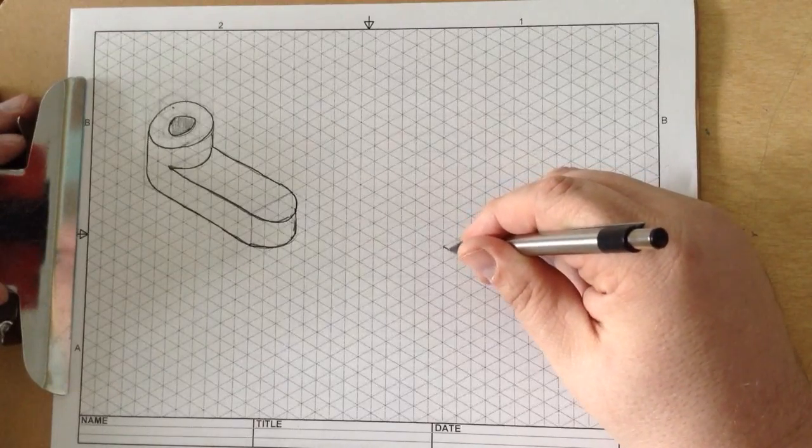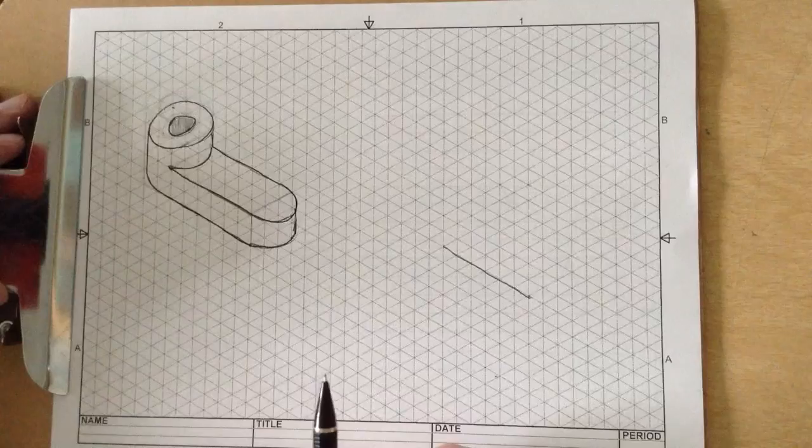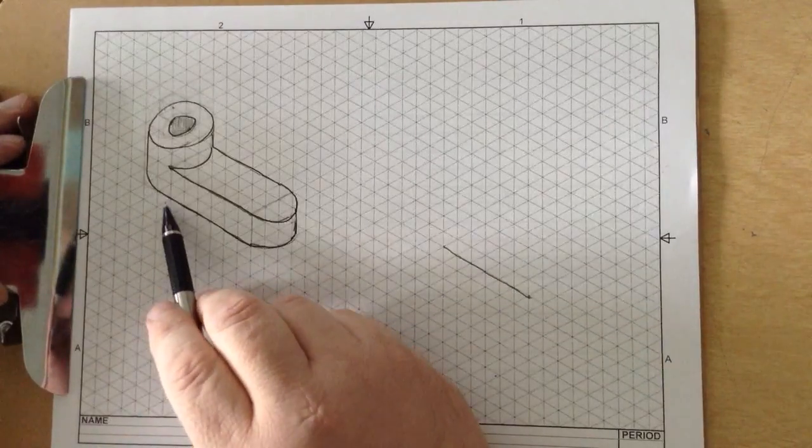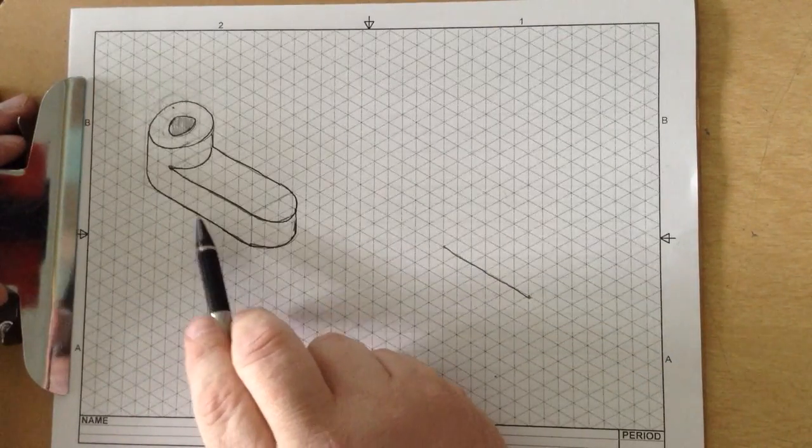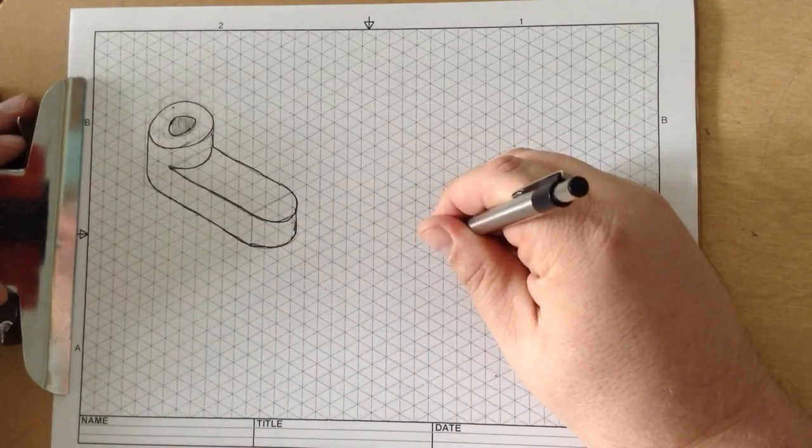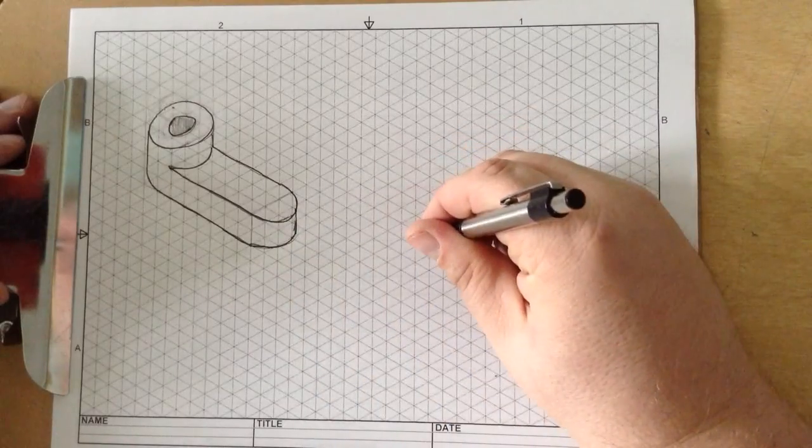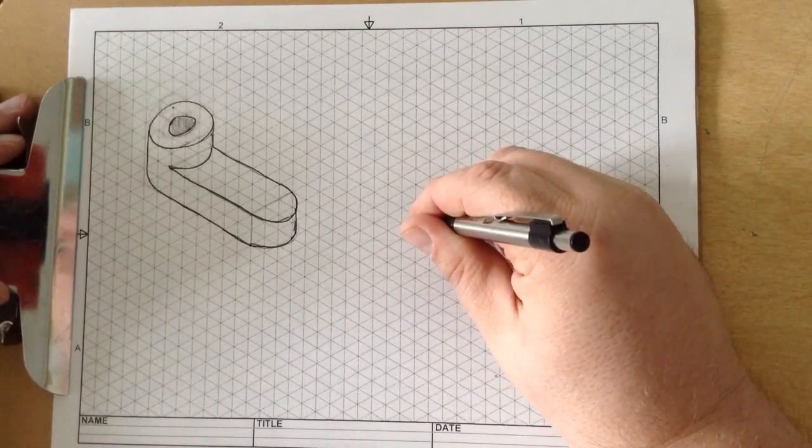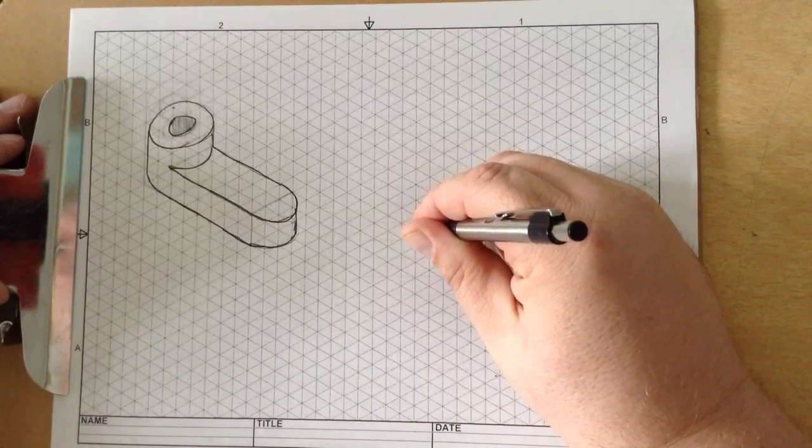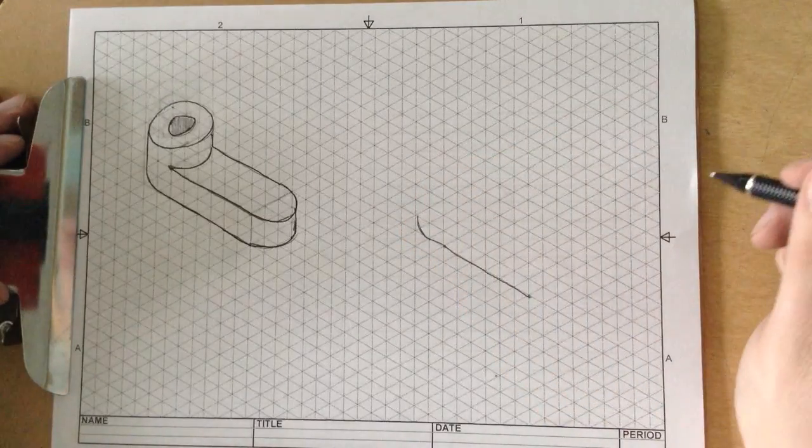Then I'm going to connect the lines right there. From there, if you notice, 1, 2, 3, 4, 5, 6, I'll go over 7. Then it goes sort of halfway up right there. So I'm going to do that, just like that right there.